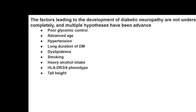Dyslipidemia — where the lipid profile is altered, particularly high-density lipids — can result in neuropathy. Smoking and heavy alcohol intake also increase the chances. There is also a genetic component: certain diabetic patients with a genetic tendency have a higher tendency to develop neuropathy. The HLA-DR3 or HLA-DR4 gene is considered responsible. Patients with tall height also have a higher chance of developing neuropathy.